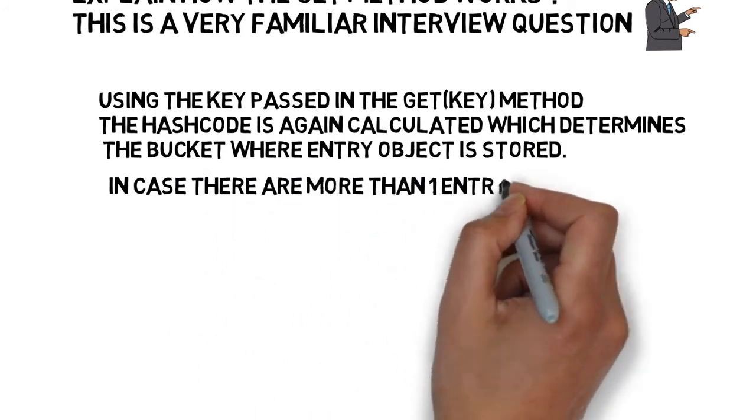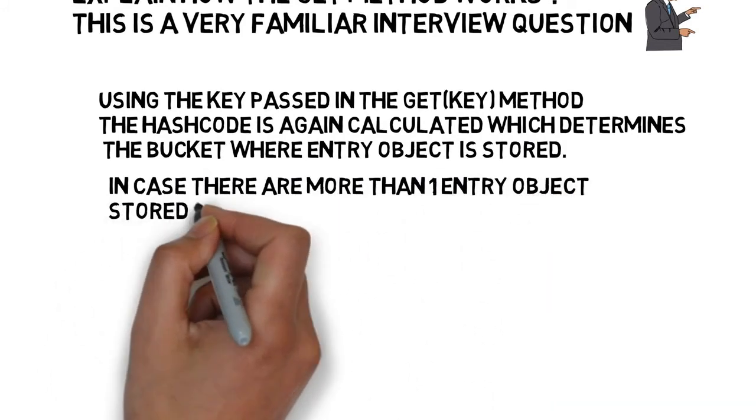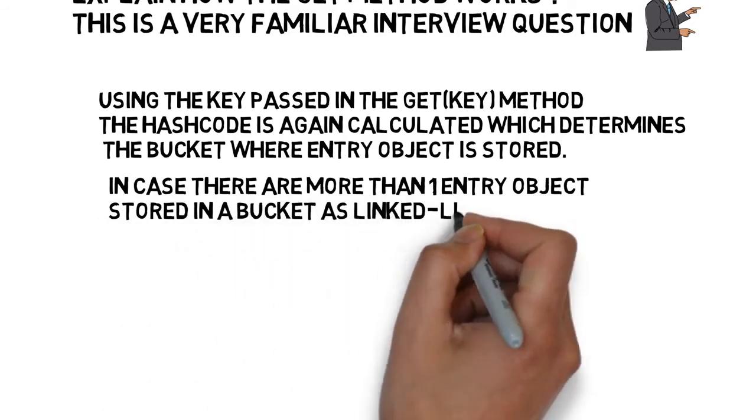In case there are more than one entry object stored in a bucket as linked list, then equals method is used to get the correct key.